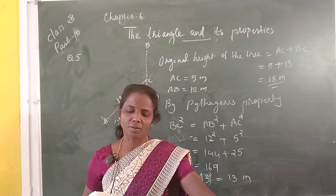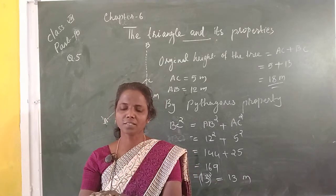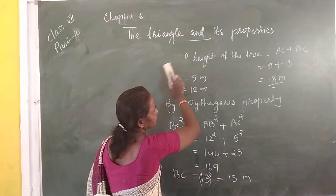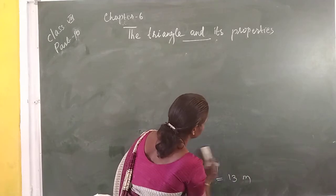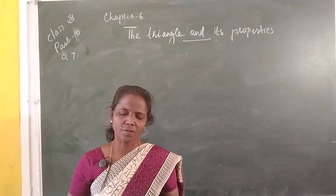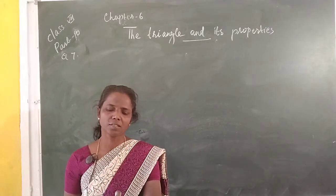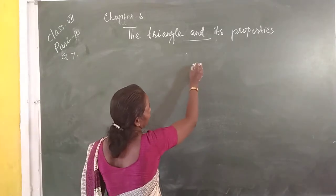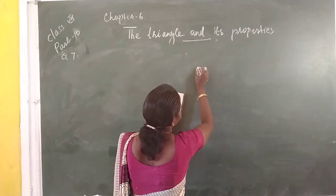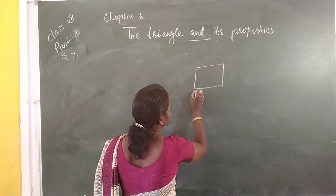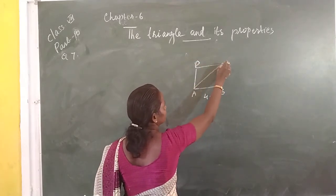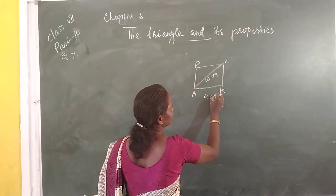Next question — question number 7: Find out the perimeter of the rectangle, where the length is 40 centimeters and the diagonal is 41 centimeters. Here, rectangle AVCB. AV is equal to 40 centimeters, and diagonal AC (D1) is 41 centimeters.